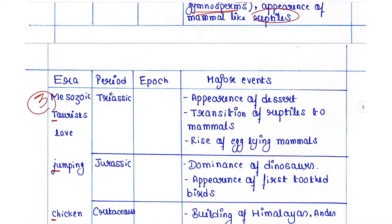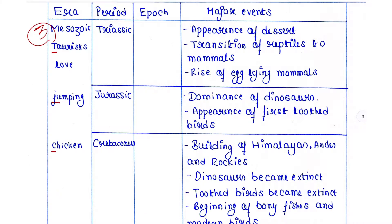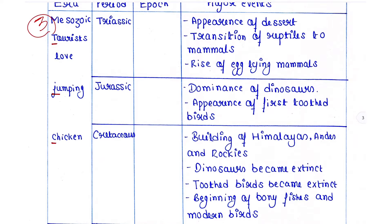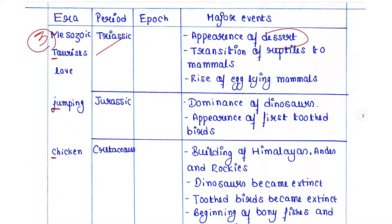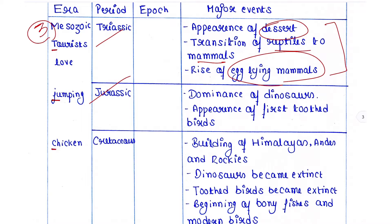The third era is the Mesozoic era, which is divided into different periods. The first is Triassic, during which deserts appeared, transition of reptiles to mammals occurred, and rise of egg-laying mammals happened. The second is Jurassic — we all know this as the dinosaur period. During Jurassic, dinosaurs dominated and the first toothed birds appeared.